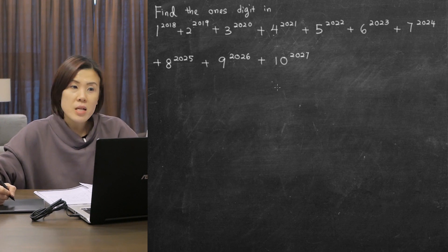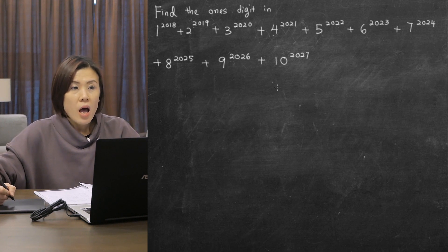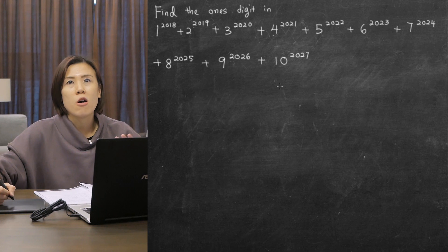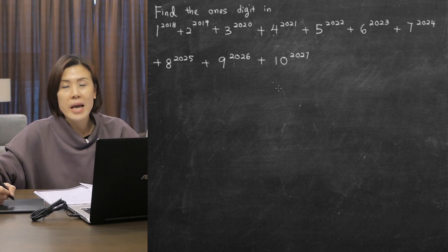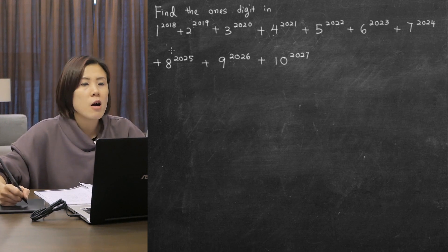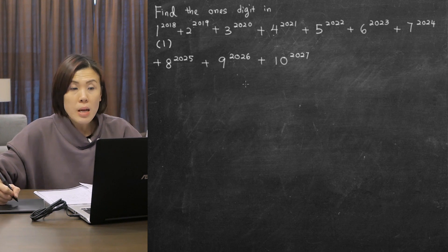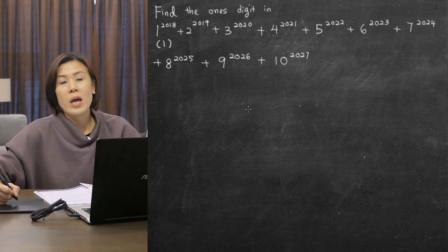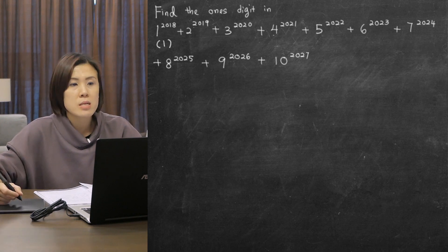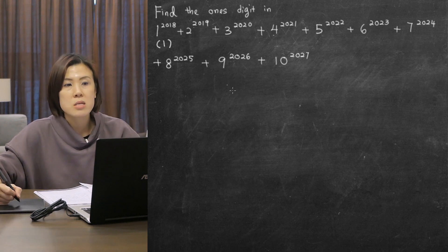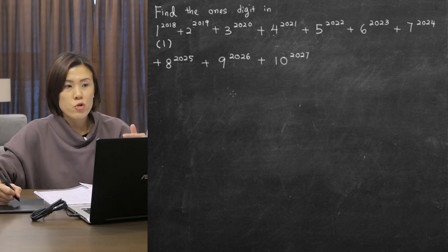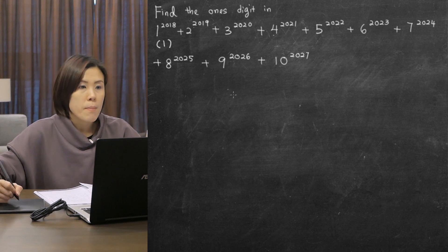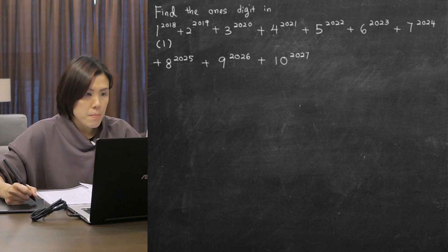Looking at the first number, 1 to the power of 18 — as you know, 1 to the power of any number is always 1, because 1 no matter how many times you multiply is always 1. So the ones digit for the first number is 1. For the second number, 2 to the power of 2019, this is a very big number and we need to find only its ones digit. Let me show you the list of powers of 2.